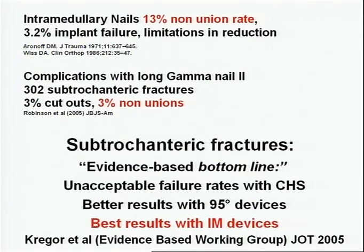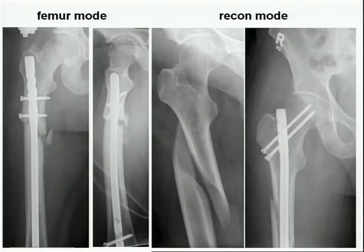But as nails were developed and third-generation nails became available, the non-union rate dropped to only 3%. This leads to the evidence-based bottom line from Gregor et al.: in sub-trochanteric fractures, you have the best results with IM devices with modern designs.